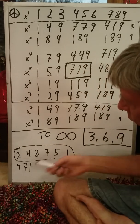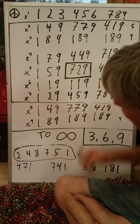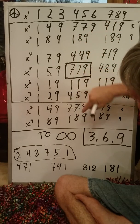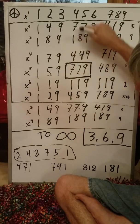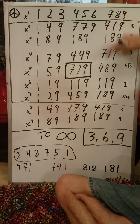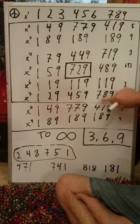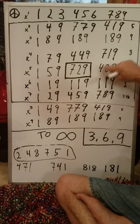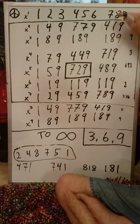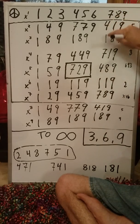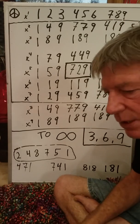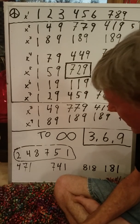We also have the 4, 7, 1 sequence: 4, 7, 1, 4, 7, 1 — a repeating sequence — as well as 7, 4, 1, 7, 4, 1, 7, 4, 1. That's a repeating sequence as well.